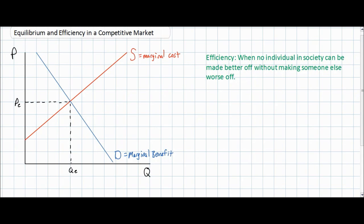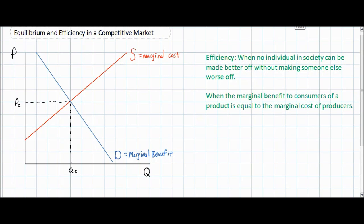There's another way to explain this graphically. In a market for a good, efficiency exists when the marginal benefit to consumers of consuming the product is equal to the marginal cost to producers to make the product.